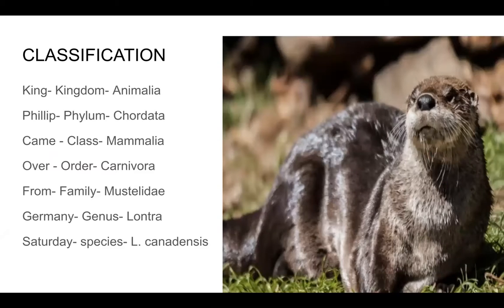The second thing Linnaeus gave us was a hierarchical classification system. There's a mnemonic to help you remember the order: 'King Philip came over from Germany Saturday' — Kingdom, Phylum, Class, Order, Family, Genus, and Species. Look at the river otter on the right — they live here in this area, one was spotted in my neighborhood last week. The kingdom is Animalia, phylum Chordata, class Mammalia, order Carnivora, family Mustelidae — he is a weasel — genus Lontra and species canadensis. So his scientific name is Lontra canadensis.